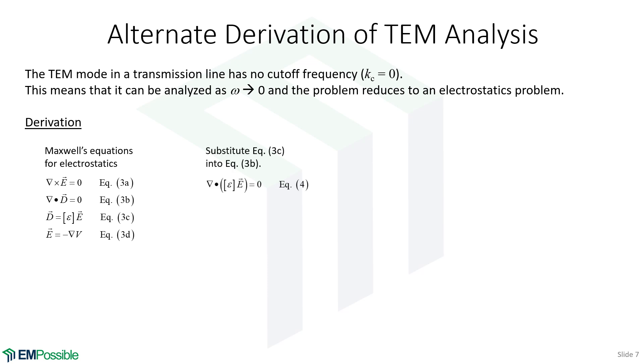So the first thing we'll do is we will take our constitutive relation and plug it into equation 3B. And that's going to eliminate this D field. So we will have del dot epsilon times E, and that equals zero. The next thing we will do is we will replace the electric field in this equation with our definition of the electric potential. So E is the negative gradient of the electric potential V. So we'll take this minus del V, plug it in for the electric field here. And now we end up with a single equation just in terms of a scalar quantity, the electric potential. And we love solving scalar equations instead of vector equations.